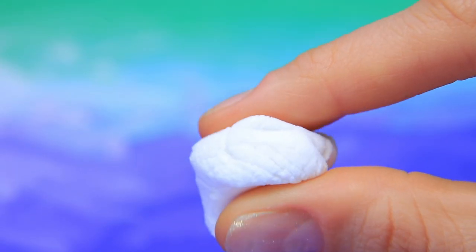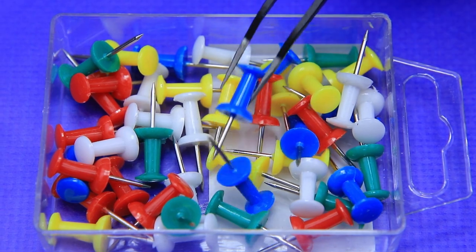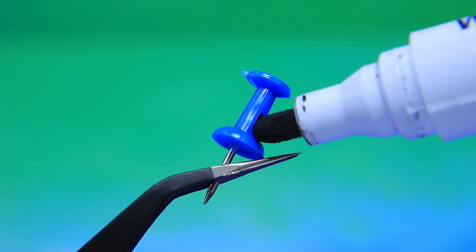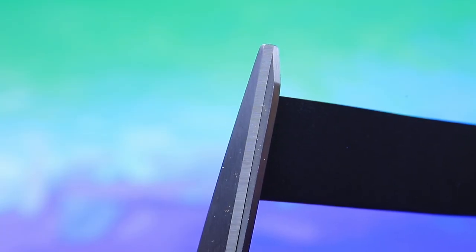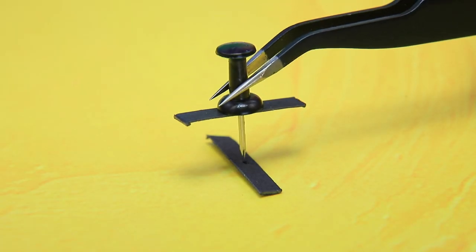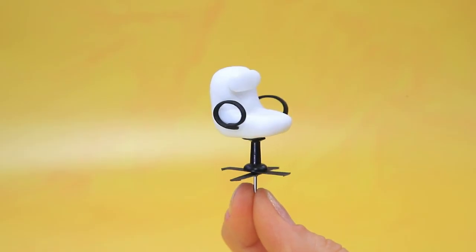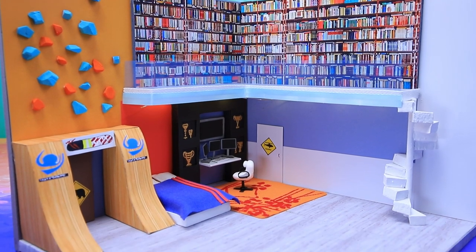Make a comfy chair out of light clay. We can use a thumbtack for a support axis. And strips of foam paper will turn into a support and comfy armrests. Make a comfy chair.